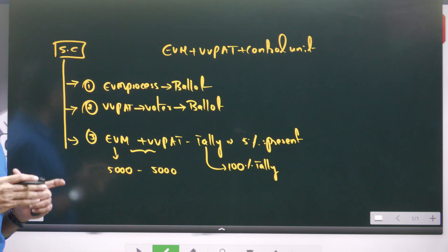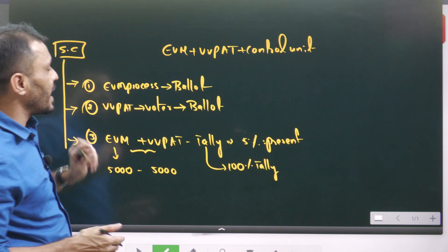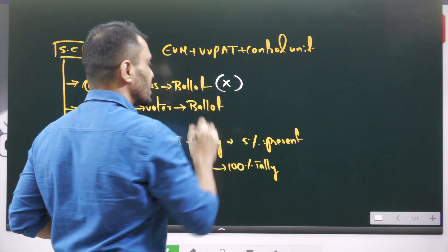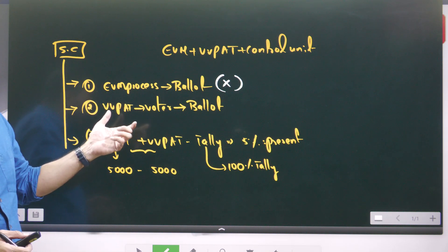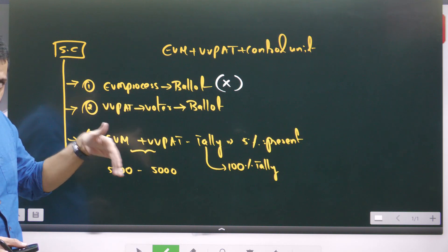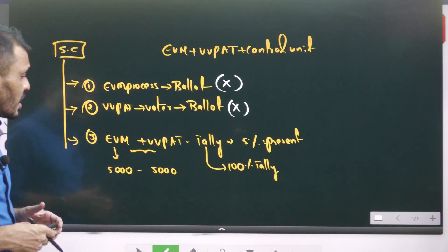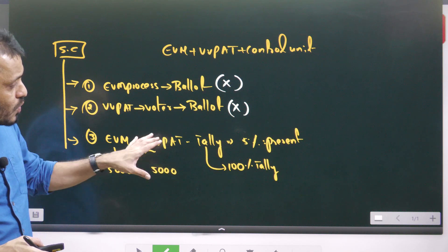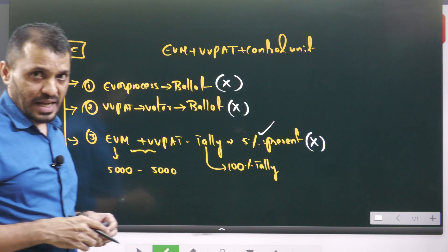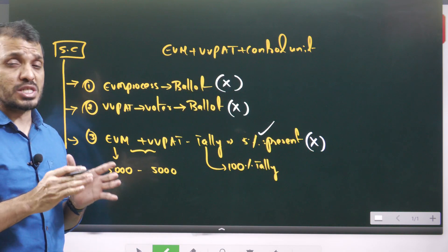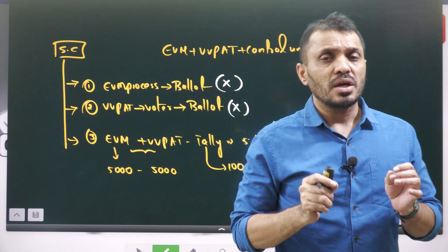The judgment was given by a two-judge bench. Going back from EVM to ballot paper was completely rejected. Giving the VVPAT slip to the voter for verification and then putting it back was also rejected. The request for 100% VVPAT tally was also rejected; the Supreme Court voted for continuation of five percent tally only. All three proposals were rejected outright.